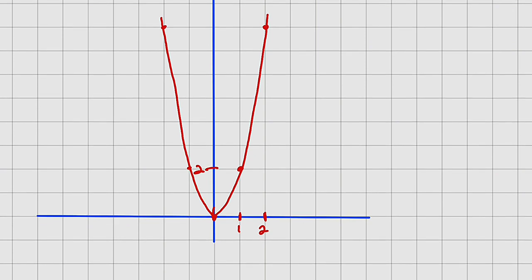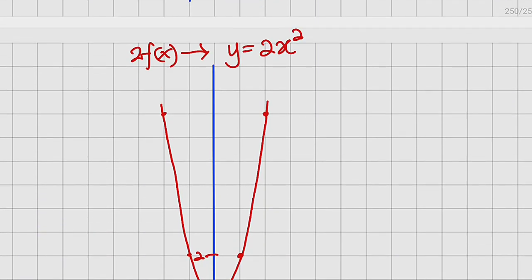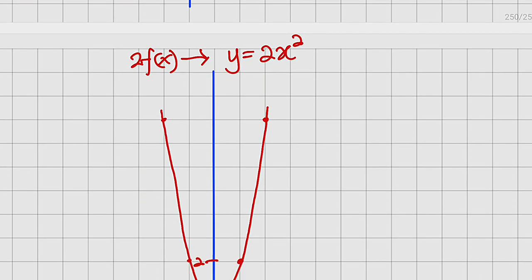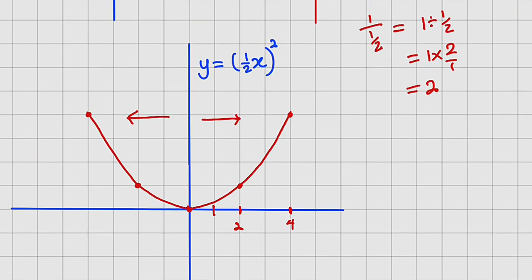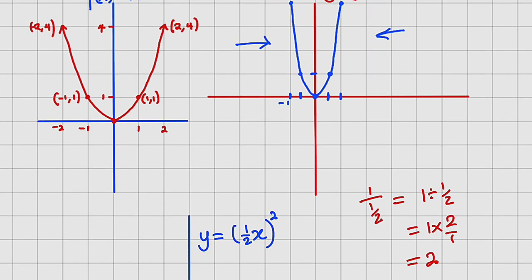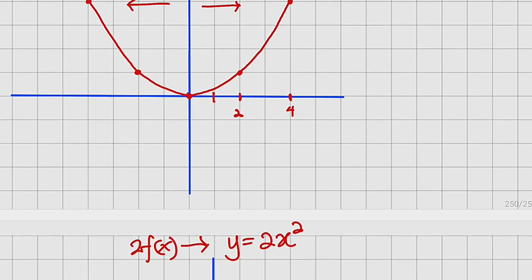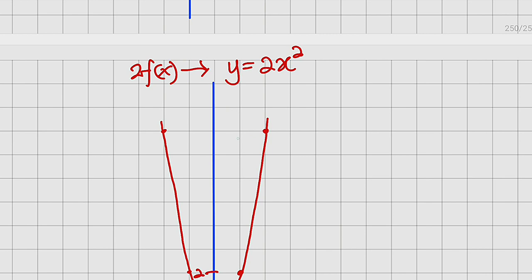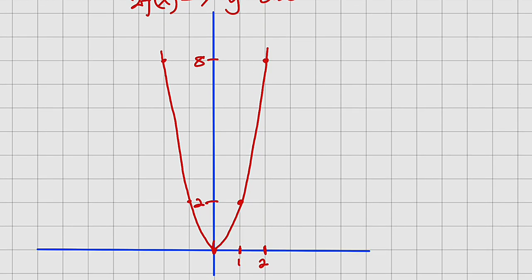This is the graph we have. Comparing it to the original graph, a vertical stretch has taken place — the original stopped at 4, but the new graph reaches 8. So this graph has been stretched vertically.